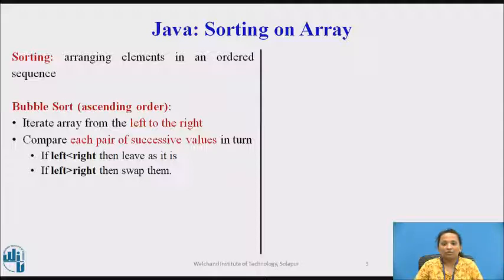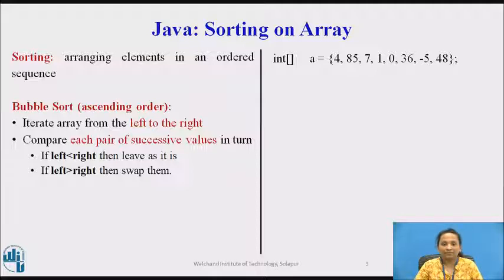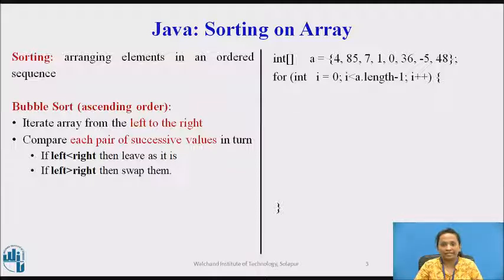Here is sample code to demonstrate the implementation of the bubble sort algorithm. First, an integer array A is initialized with the values 4, 85, 7, 1, 0, 36, -5, and 48. Then loop i repeats the procedure of arrangement of elements n times, and loop j iterates the array from left to right, from index 0 to array length.